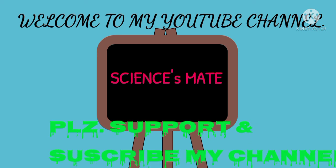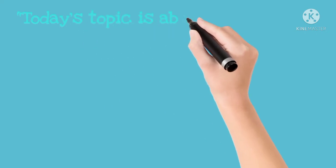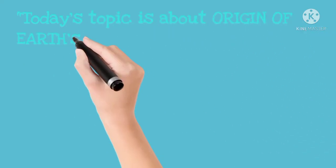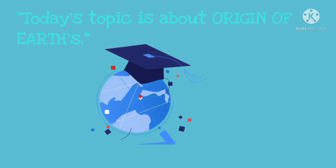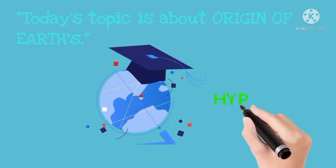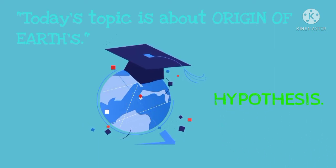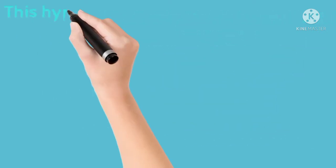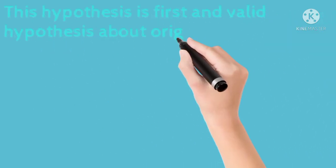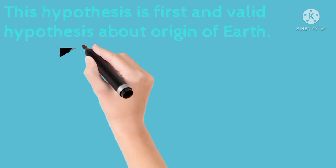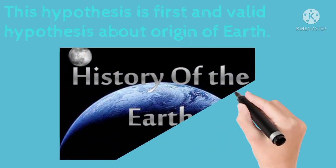Basically, there are three hypotheses regarding the origin of Earth. They are: the George Buffon hypothesis, the nebular hypothesis, and the tidal hypothesis. In this video I want to describe the first reliable and valid hypothesis from these three.